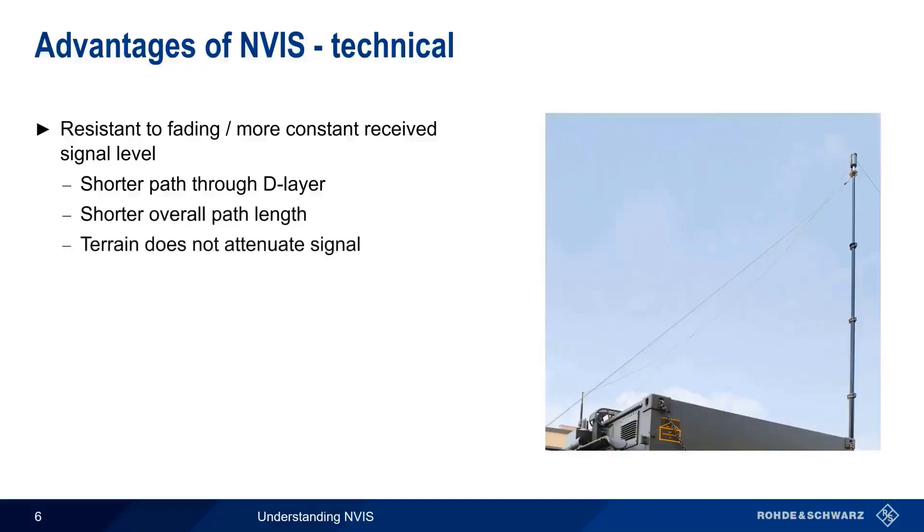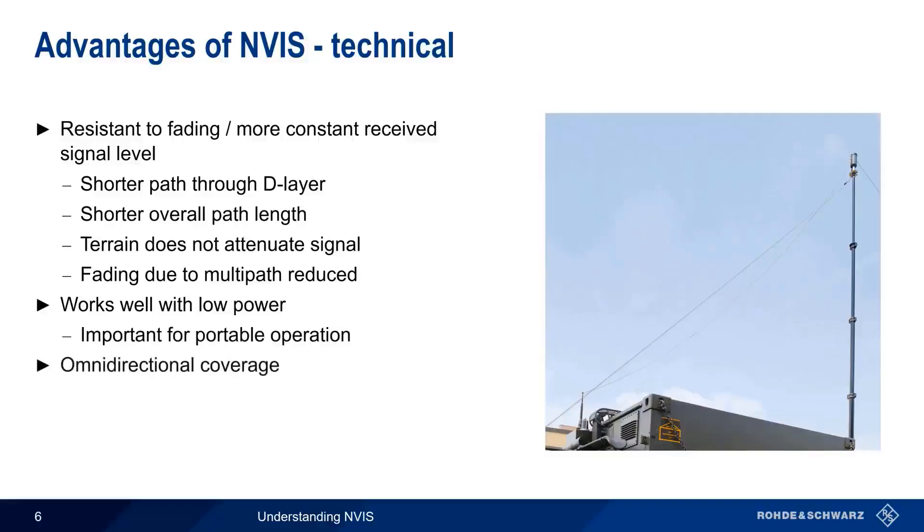Attenuation of the signal due to terrain is minimal or non-existent because there's line of sight propagation between the transmitter and the ionosphere, and between the ionosphere and the receiver. This line of sight propagation also helps to reduce fading due to multipath. All of these factors mean that NVIS works relatively well at low power levels, which is particularly important for portable or battery-powered operation in the field. And as we'll see shortly, NVIS antennas provide roughly omnidirectional coverage. This omnidirectional pattern means that antenna orientation, or azimuth, is relatively unimportant, which in turn permits a great deal of flexibility in the setup and sighting of NVIS antennas.